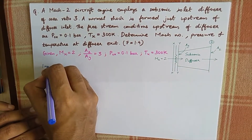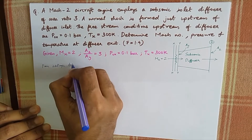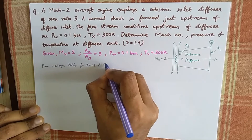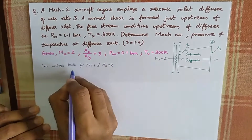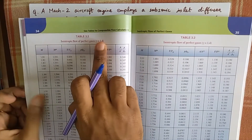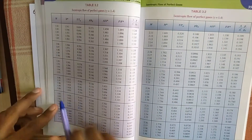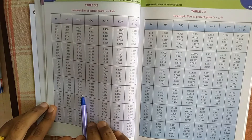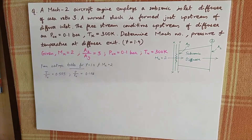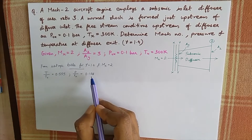From isentropic tables, for gamma equal to 1.4 and Mx equal to 2, the corresponding ratios are: T by T0 is 0.555 and P by P0 is 0.128.